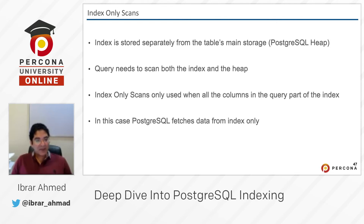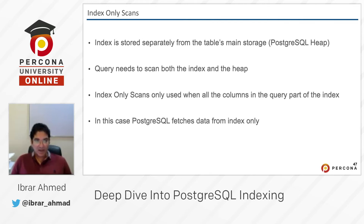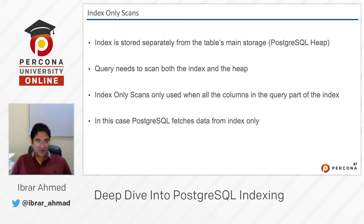But there are cases where our query uses only columns that are already present in the index. Without index-only scan, we go to the index, read the pointer, then go to the heap to fetch the values. So we end up scanning both the index and the heap to read the data.